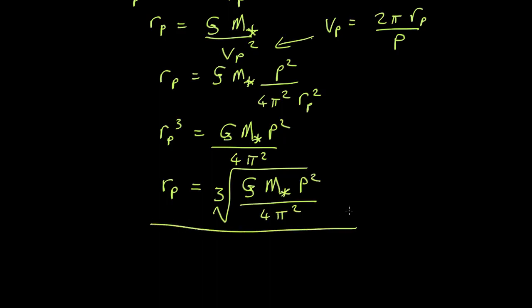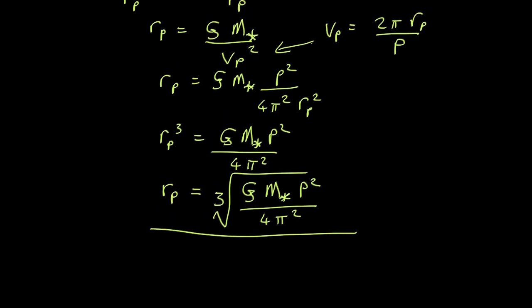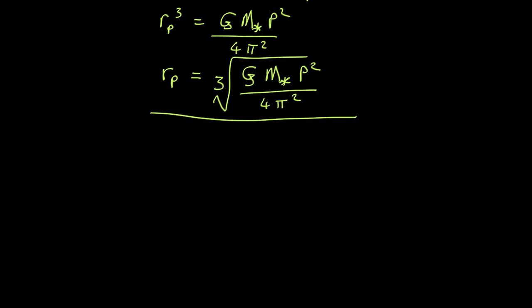So that means if you work out the period with which a star is oscillating backwards and forwards and you know the mass of the star, that's all you need to work out how far away the planet is from it. r p being approximately equal to sum of r star plus r p.